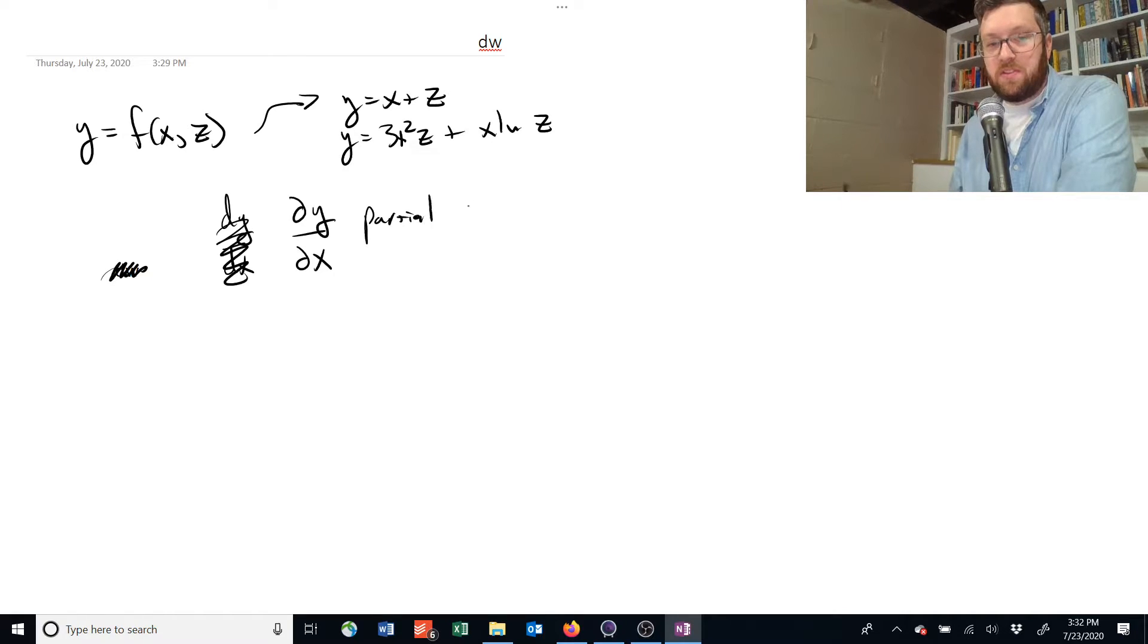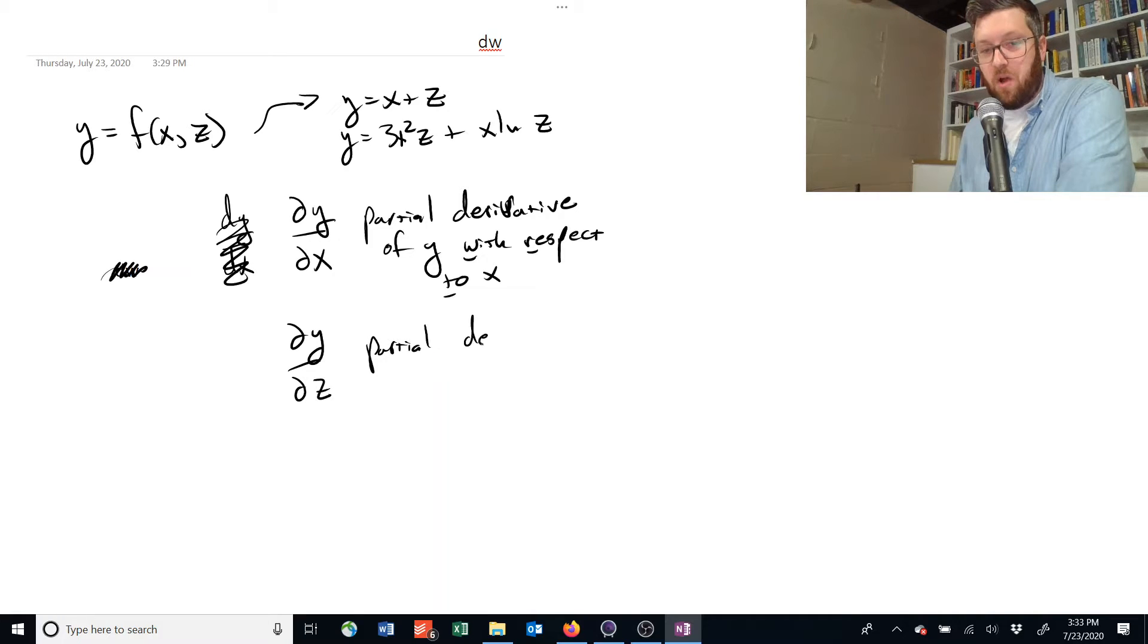So this is the partial derivative of y with respect to x. Usually I'll write 'with respect to' as just 'wrt'. I could also write ∂y/∂z - that would be the partial derivative of y with respect to z. This is the main way that we're going to write this, but there are alternatives.